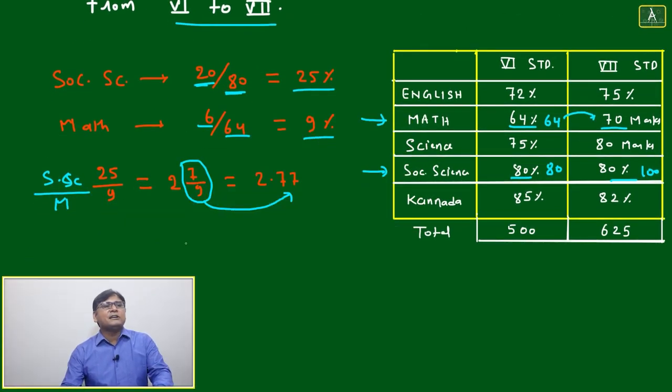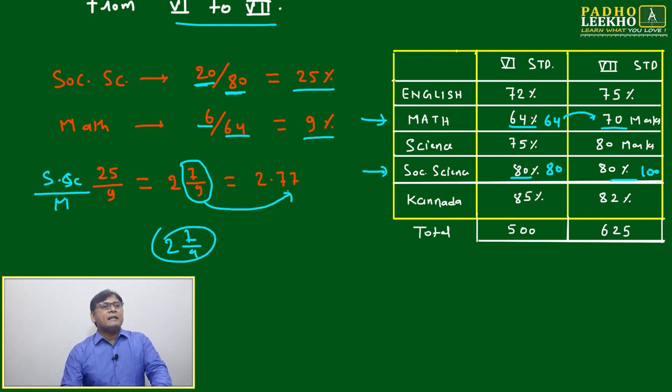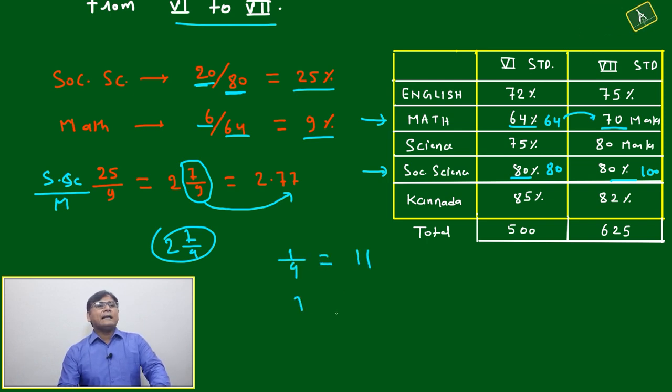This is a kind of mixed fraction. Fractions will be of two types. This way of representation is called mixed fraction: 2 and 7 by 9. We can directly convert 7 by 9 to decimal, that is 0.77. Since 1 by 9 is 0.11, then 7 by 9 will become 0.77.